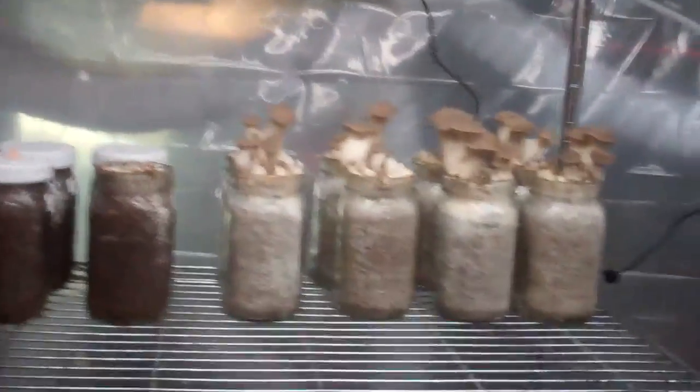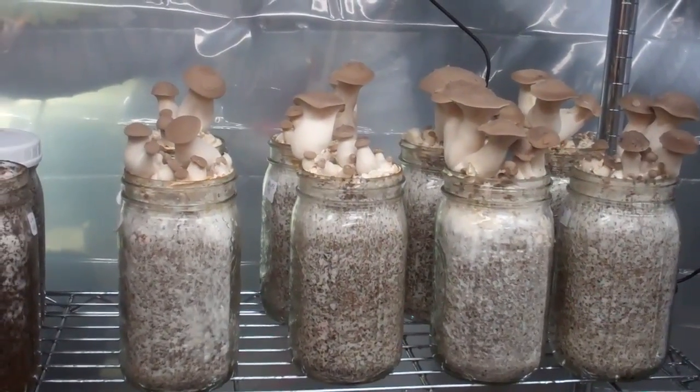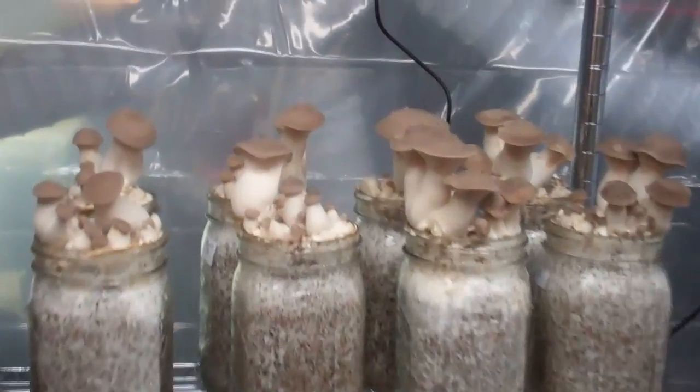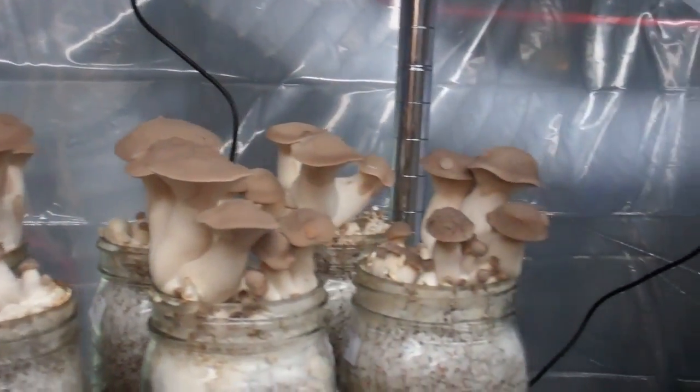After the seven days is over, you just simply remove the lid and bring them in and set them on the growing rack, and this is what they look like about nine to ten days later. These should be ready to harvest in a day or two.